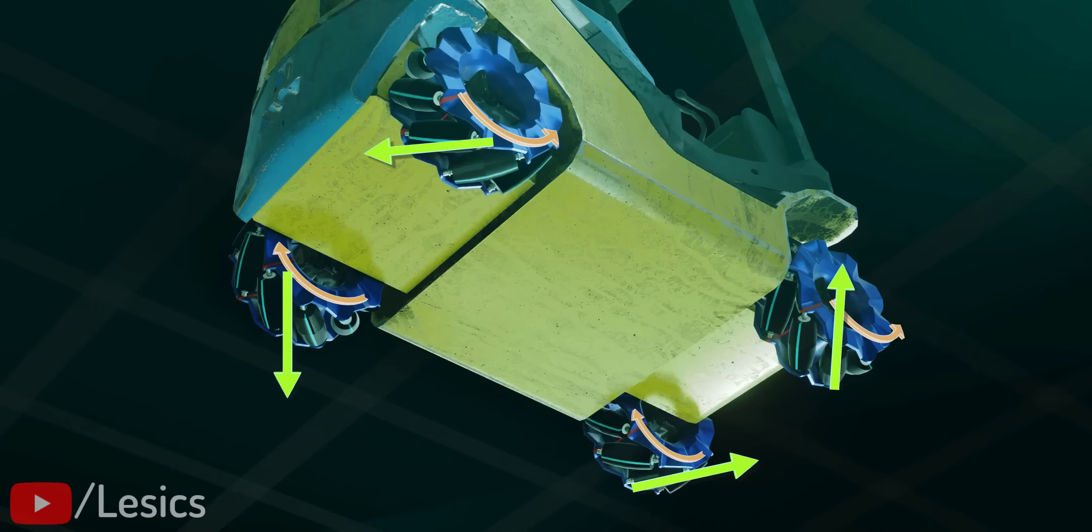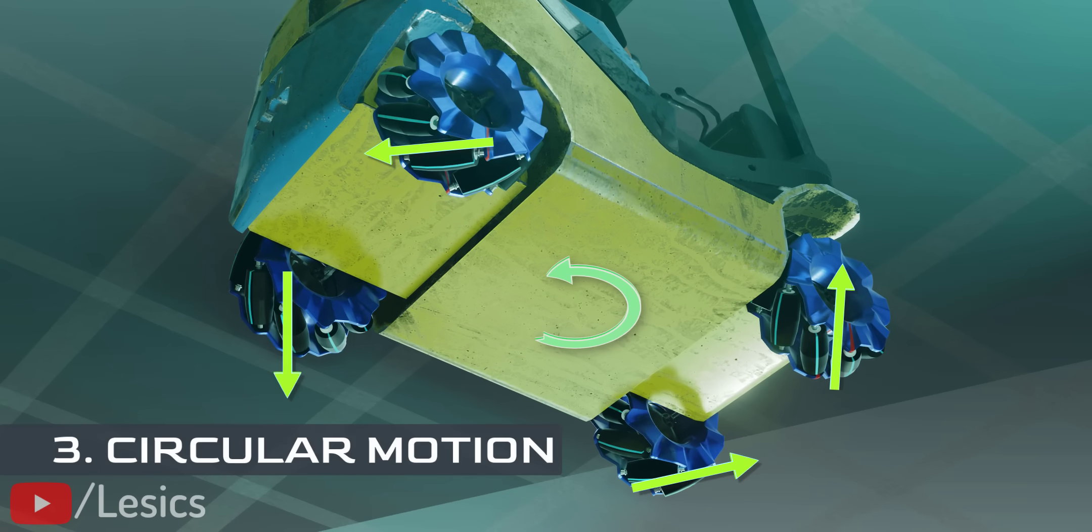Here, all the X and Y components of the forces get cancelled, resulting in a lack of translatory motion. However, these forces can produce a net torque, which will make the car spin at its center.